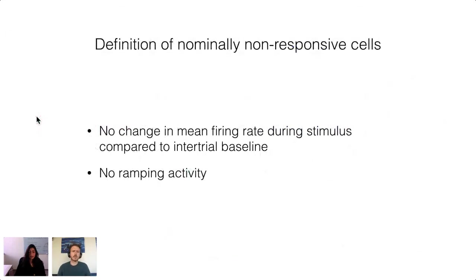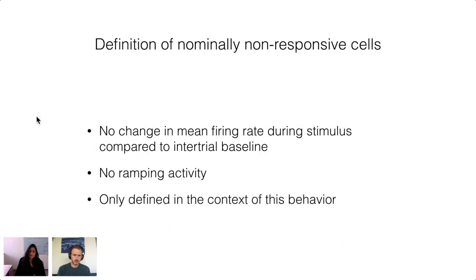A cell is considered nominally non-responsive when its trial activity is statistically indistinguishable from inter-trial baseline activity. The majority of cells in both regions were found to be nominally non-responsive. To be clear, nominally non-responsive cells are defined only in the context of this particular task — this doesn't preclude the possibility that these cells can be driven by other stimuli or conditions. The question is whether they are contributing in the context of this behavior.